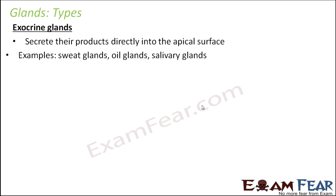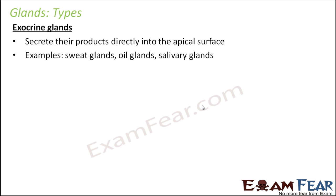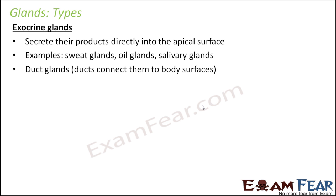Ducts are present in exocrine glands. Examples of such glands are sweat glands, oil glands, and salivary glands. Sweat is secreted on the skin surface, and saliva is secreted in the oral cavity. These are also known as duct glands because ducts are present to connect them to the body surfaces.